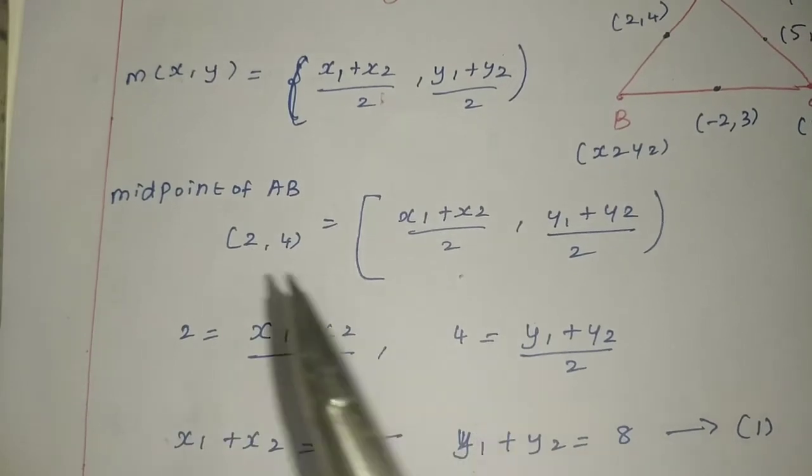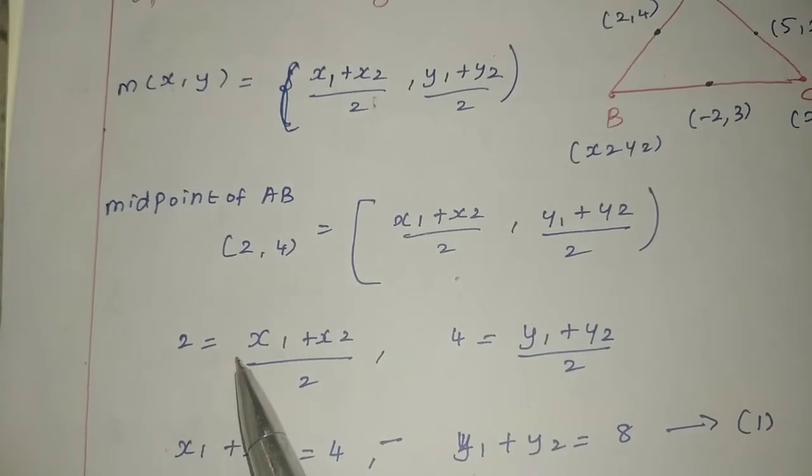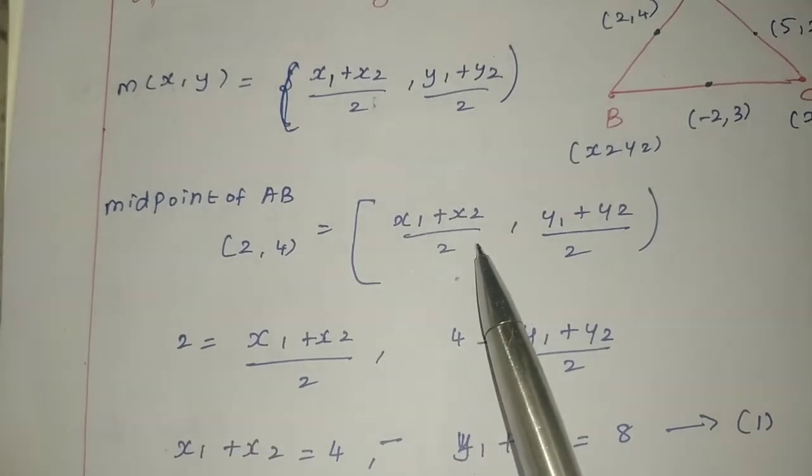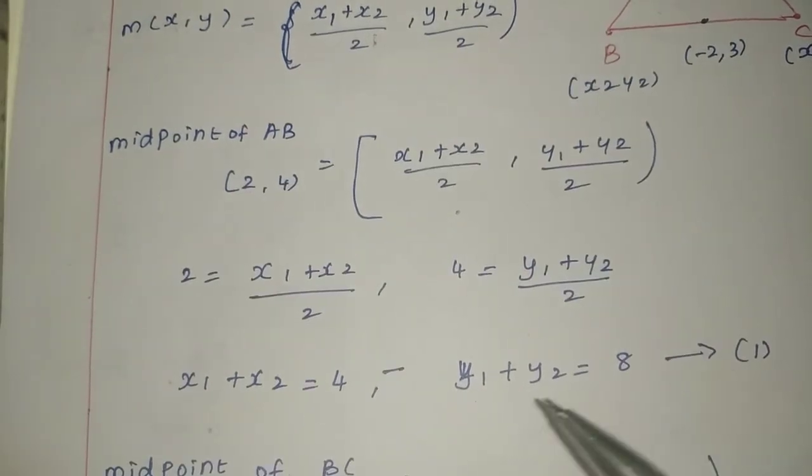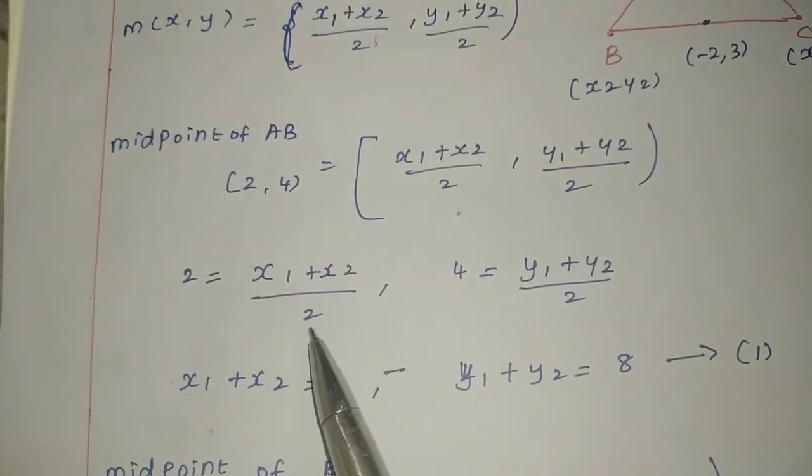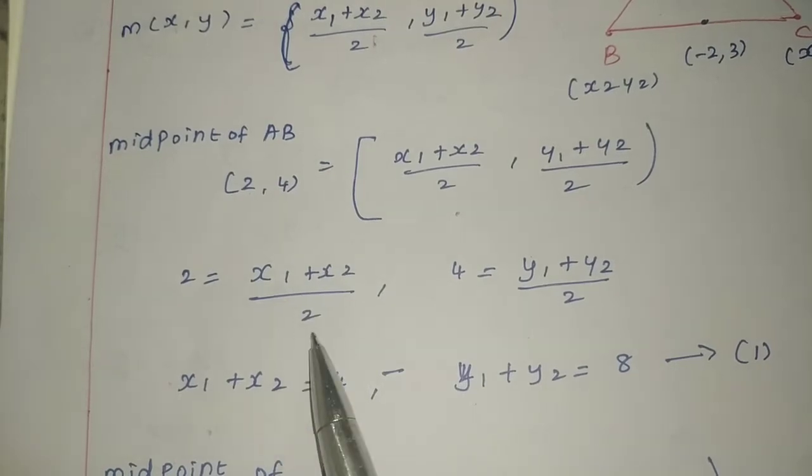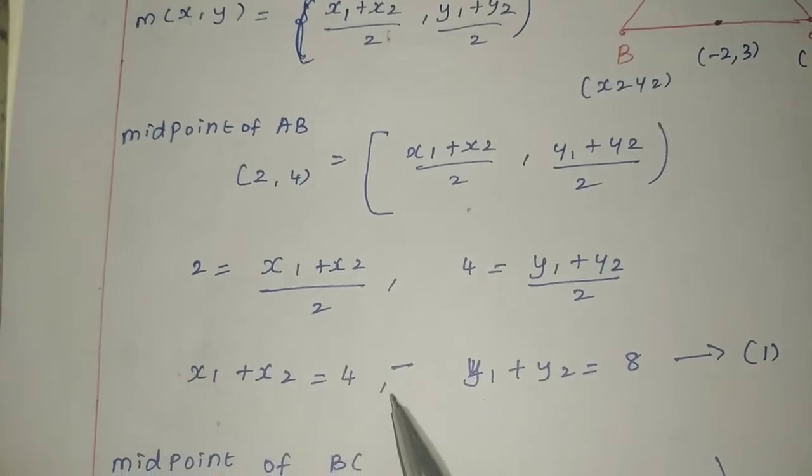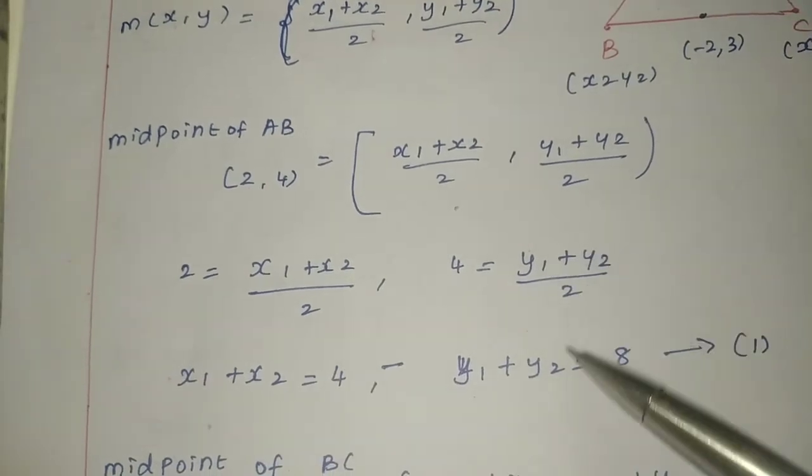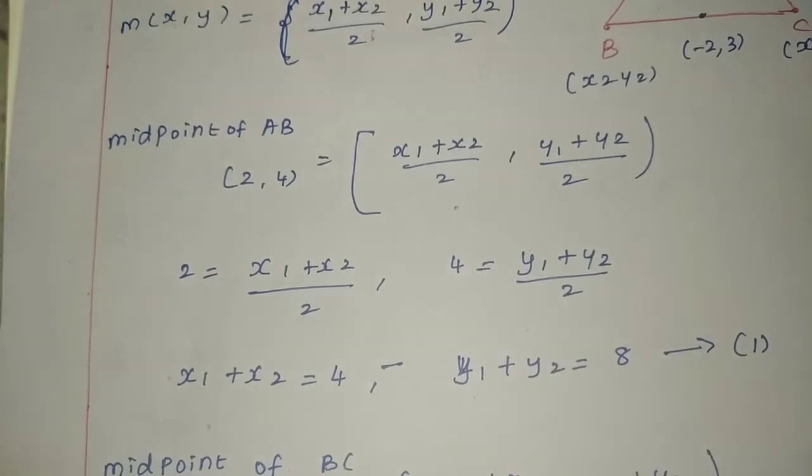So 2 equals (x1 + x2)/2 and 4 equals (y1 + y2)/2. Cross-multiplying, x1 + x2 equals 4 and y1 + y2 equals 8.